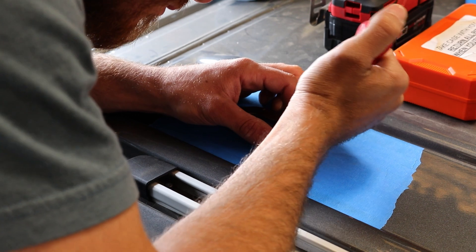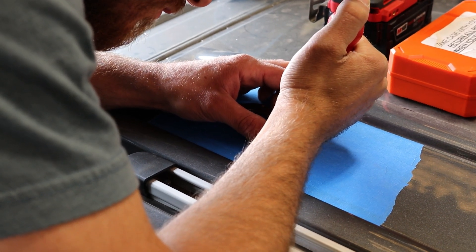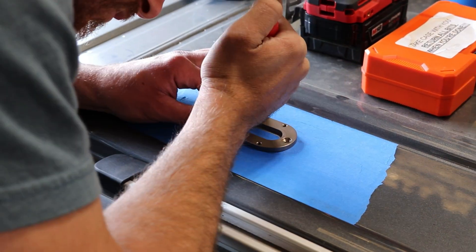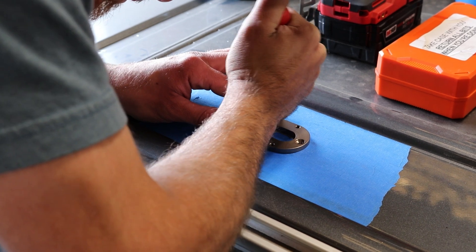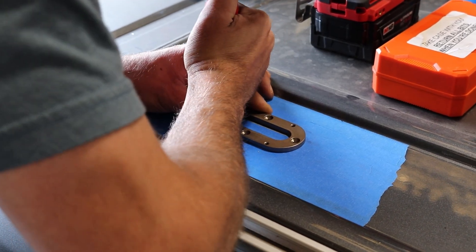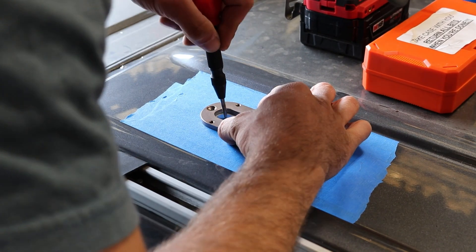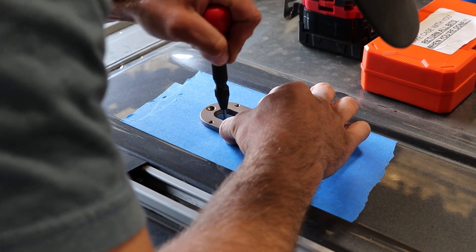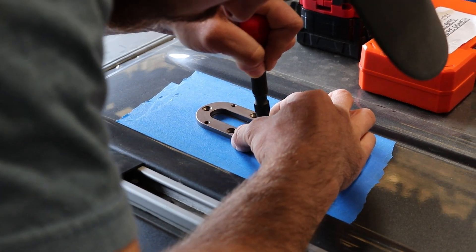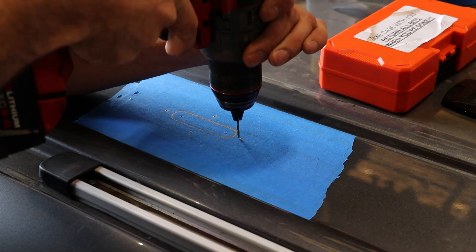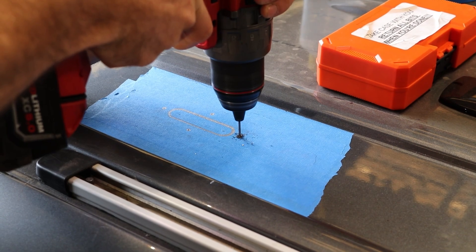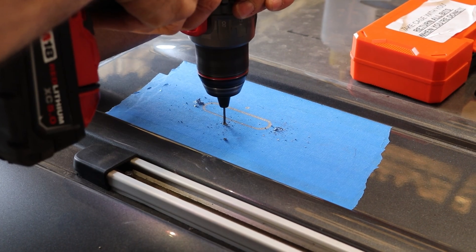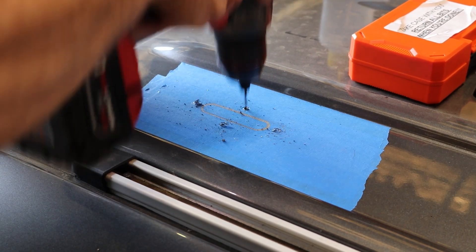And we're just tracing out all the areas with a marker that need to be cut or drilled. Now we're going through and we're taking our punch to mark the holes. The punch is kind of nice because it actually helps keep the drill bit from drifting. He's marking all of the holes that he plans to start with the drill bit, including the ends of the large center cutout that he's going to be using the hole saw for.